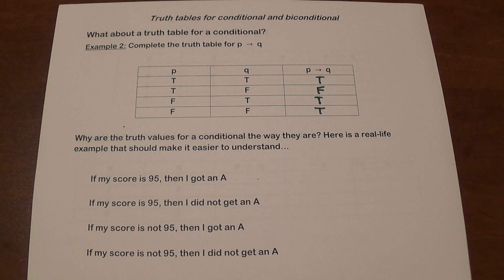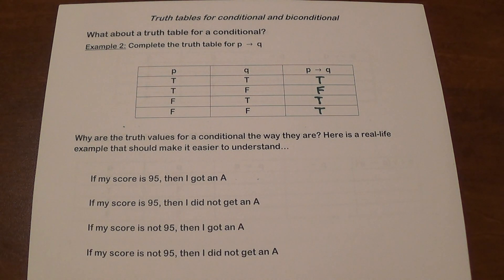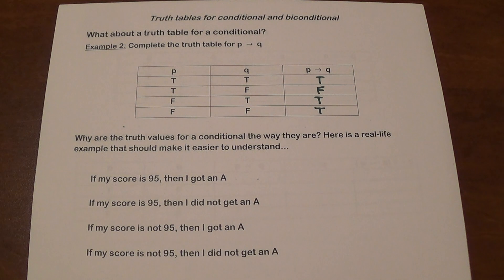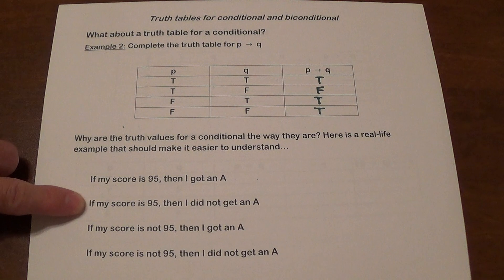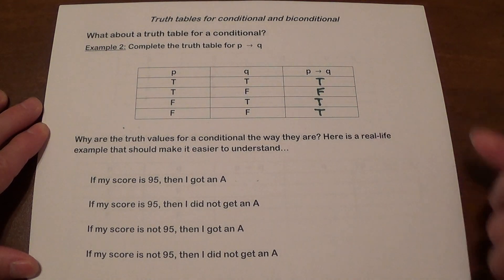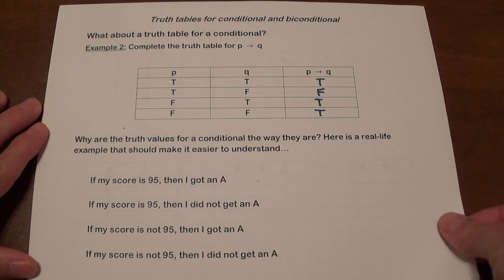For the remaining cases: if my score is not 95, then I got an A — not necessarily true, since you could have gotten 85 and not have an A. If my score is not 95, then I did not get an A — also not necessarily true, since you could have gotten 94 and still have an A. So only the true-false case is false. Remember this for conditional statements.